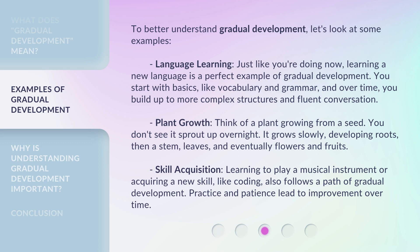Plant growth: think of a plant growing from a seed. You don't see it sprout up overnight — it grows slowly, developing roots, then a stem, leaves, and eventually flowers and fruits. Skill acquisition: learning to play a musical instrument or acquiring a new skill, like coding, also follows a path of gradual development. Practice and patience lead to improvement over time.